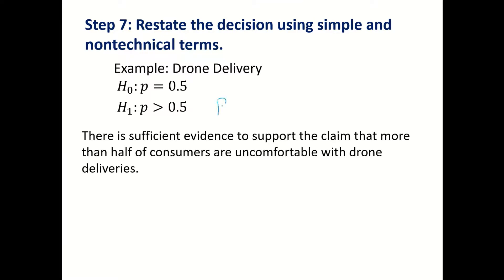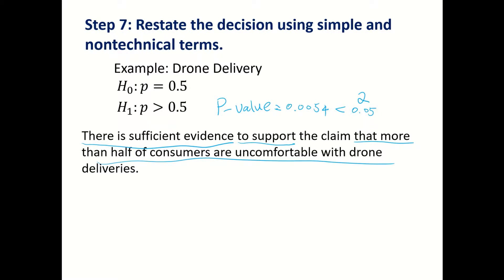Remember, for the drone delivery problem we got p-value equal to 0.0054. This is a lot less than 0.05, our significance level. So that means our sample is very extreme. There is sufficient evidence to reject the null hypothesis, or we can say to support the alternative hypothesis. The conclusion is: there is sufficient evidence to support the claim that more than half of consumers are uncomfortable with drone deliveries.